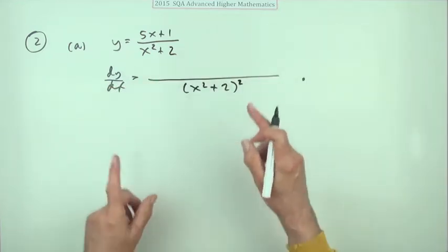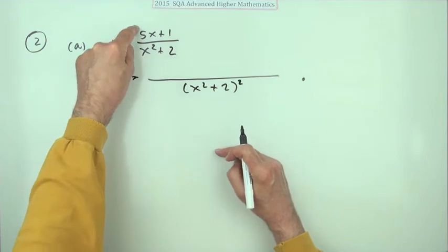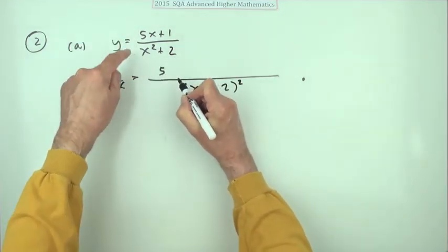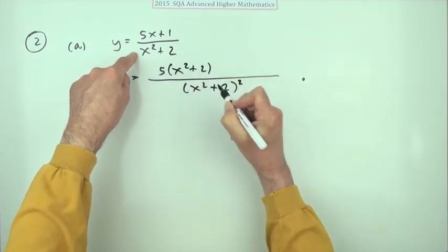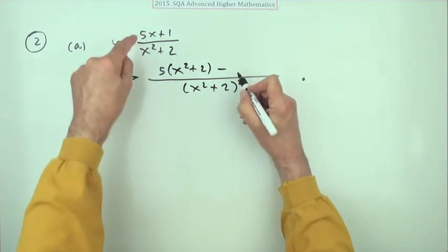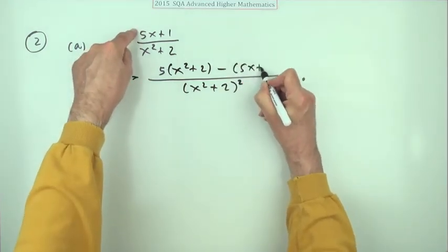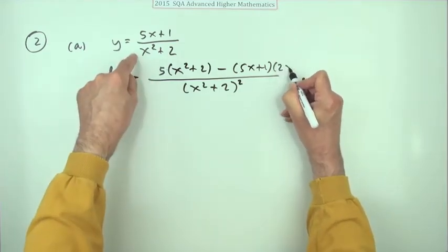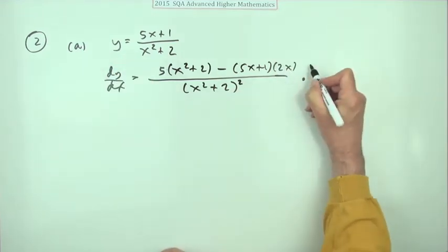The next mark is for getting the correct numerator. Well that's just in the order of this one first, so differentiate the top, that's just a 5 times leave the other one alone x squared plus 2, minus because it was a negative power, now leave that one alone 5x plus 1 and this one gets its turn, differentiate this 2x.